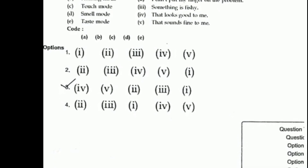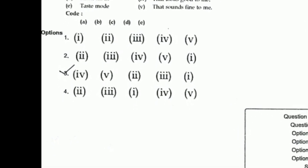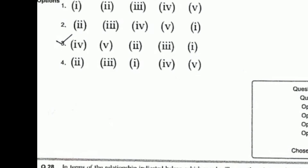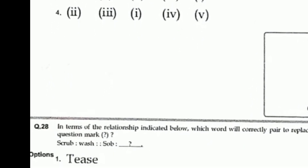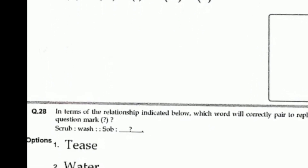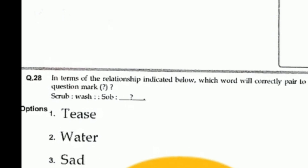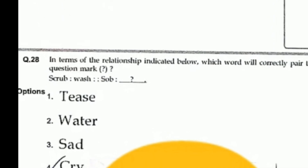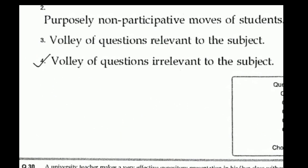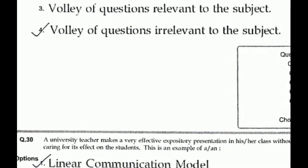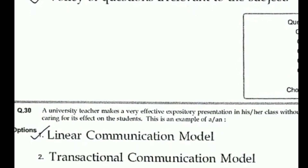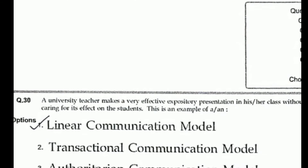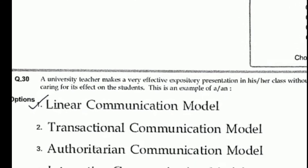Set one, set two: the right answer is 4, 5, 2, 3, 1. Question 28: relationship — the right answer is cry, option D. The right answer for question 29 is option four, volume of questions irrelevant to the subject. Question 30: option one is the right answer.